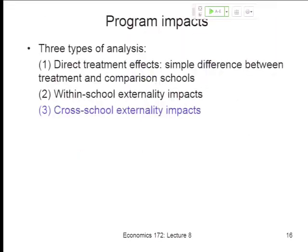The next piece of the puzzle is cross-school externalities. We've talked about direct treatment effects across treatment and control schools, then within-school externalities, and now cross-school externalities. The econometrics are very similar, but conceptually they're different. Within-school externalities are easy to understand — we're in the same community, sitting next to each other, infecting each other. Cross-school externalities are the same idea but over a greater distance.